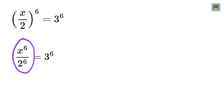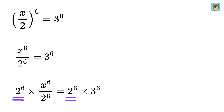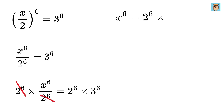Now we want to remove the fraction. To do this, we multiply both sides by 2 raised to the power 6. This gives us x raised to the power 6 equals 2 raised to the power 6 multiplied by 3 raised to the power 6.